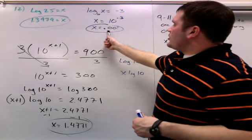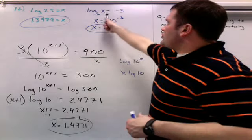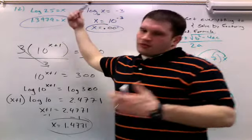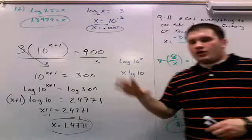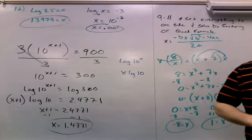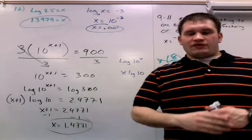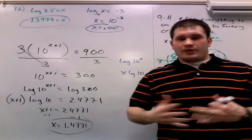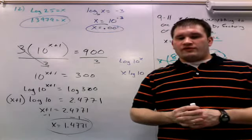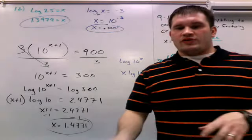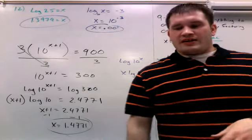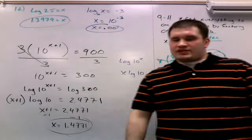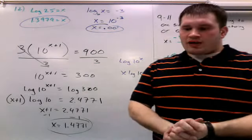To check your answers, plug x back into the original equation and verify it equals 900. Similarly, you can plug 0.001 in for x in the log problem and you should get negative 3. Hopefully this helps. Like I said, this isn't designed to give you answers — it's designed to help you work through the problems. Hopefully these examples help you work through the problems on your review and prepare you for your test. As always, if you have any questions, don't hesitate to come see me, and good luck.